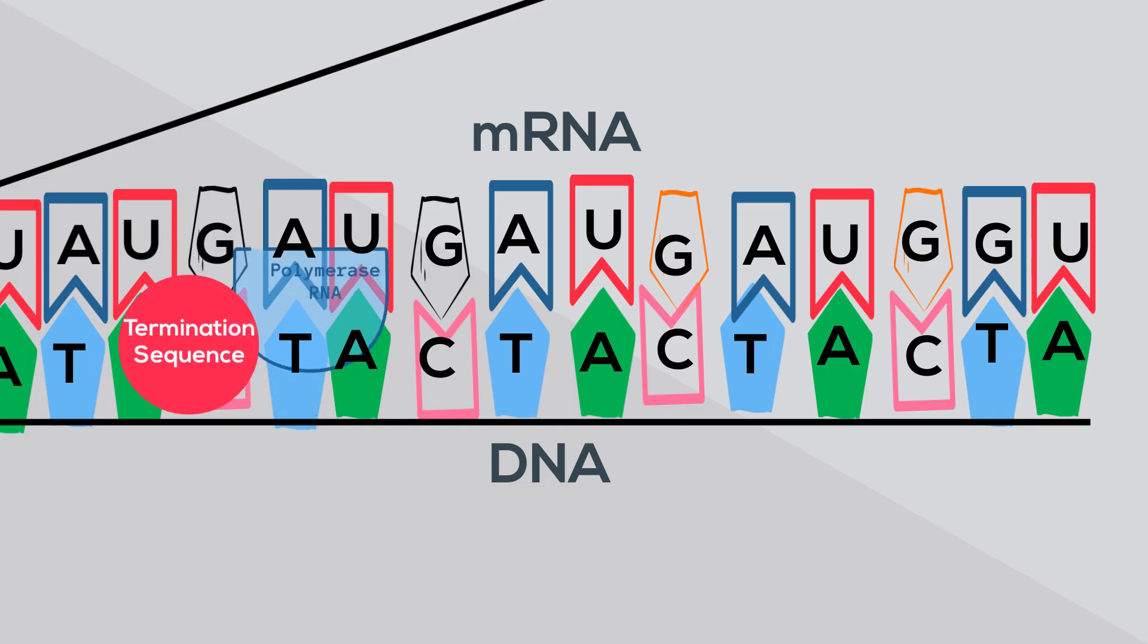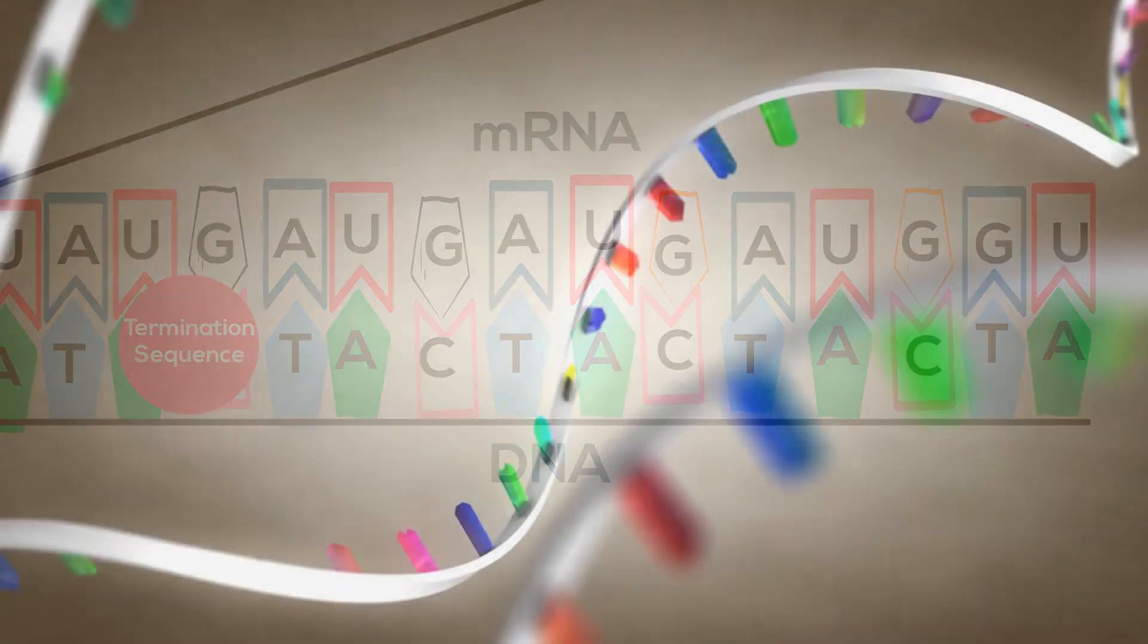When the RNA polymerase reaches a stop code, it detaches from the DNA and the mRNA is complete. This step is called termination. The mRNA travels out of the nucleus and into the cytoplasm.